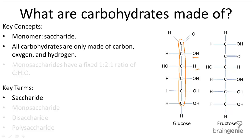A carbohydrate made of one saccharide is called a monosaccharide — mono equals one. So it's really easy to guess what a carbohydrate with two saccharides is called: a disaccharide, di for two.